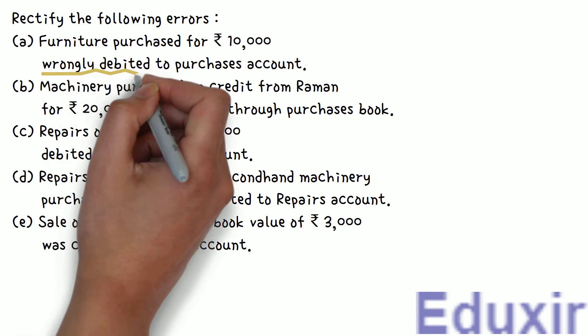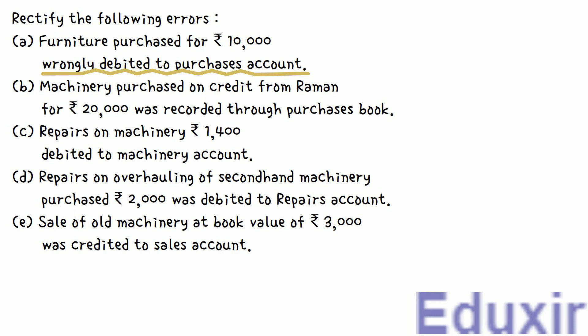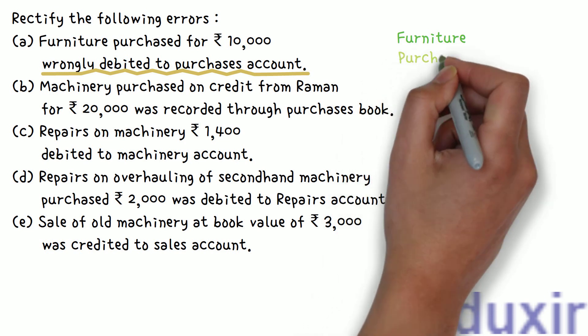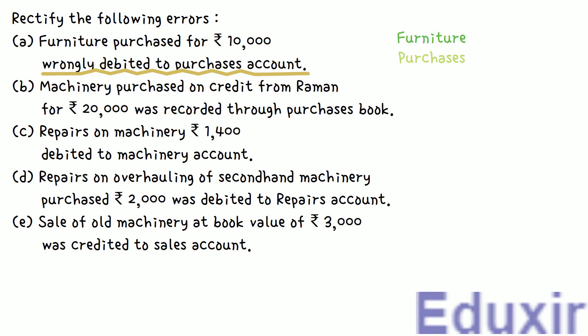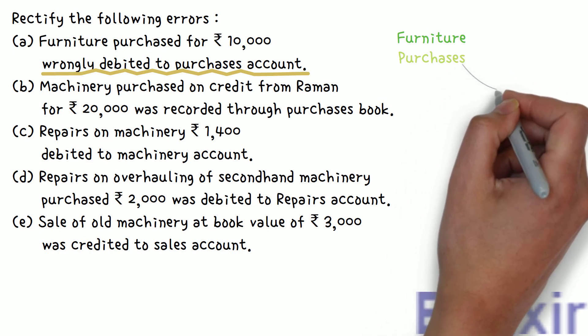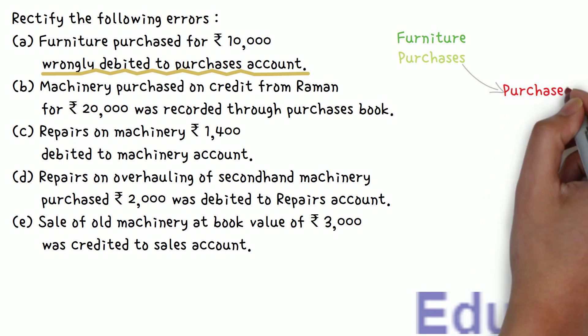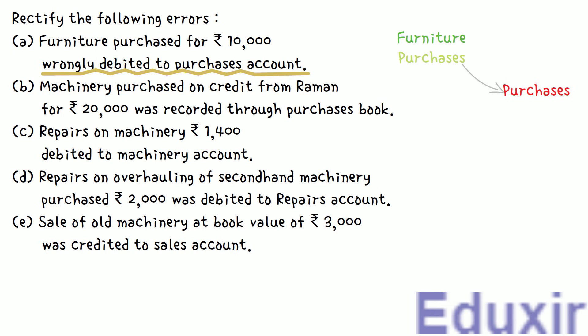Let us start with the analysis of the first error. In this case, 10,000 rupees of furniture purchased was wrongly debited to Purchases Account. Furniture is capital expenditure and hence should be considered as an asset. When new furniture is purchased, we should make an entry in the Furniture Account on the debit side. To rectify this error, we should debit Furniture Account and credit Purchases Account with 10,000 rupees to nullify the erroneous entry.